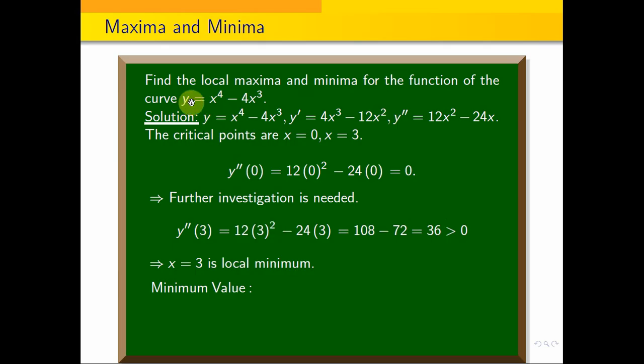The local minimum value equals y at x equals 3: 3 to the power 4 minus 4 times 3 cubed, that equals 81 minus 108, which equals minus 27.